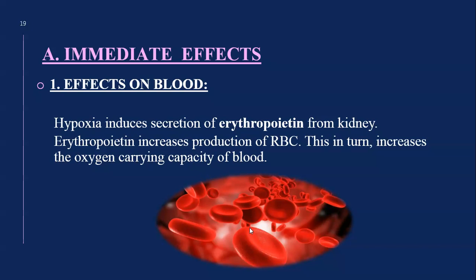Starting with immediate effects on blood: hypoxia induces secretion of erythropoietin from the kidney. Erythropoietin increases production of RBCs, which in turn increases the oxygen carrying capacity of the blood. The increased number of RBCs can attract more oxygen molecules, which ultimately helps the body fight against hypoxia.